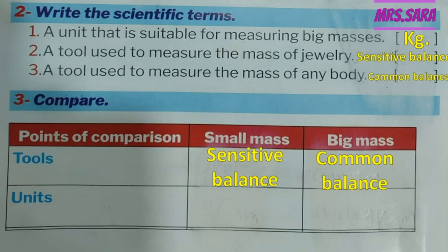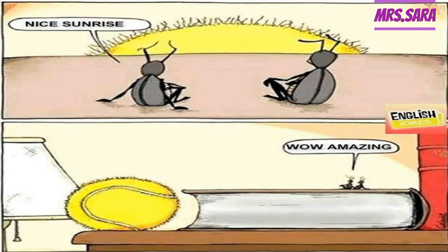Number 2 — the units: The unit of small mass is gram, and the unit of big mass is kilogram. Excellent, boys and girls! This was our lesson for today. I hope you enjoyed. Don't forget to like, subscribe, and share. Goodbye!